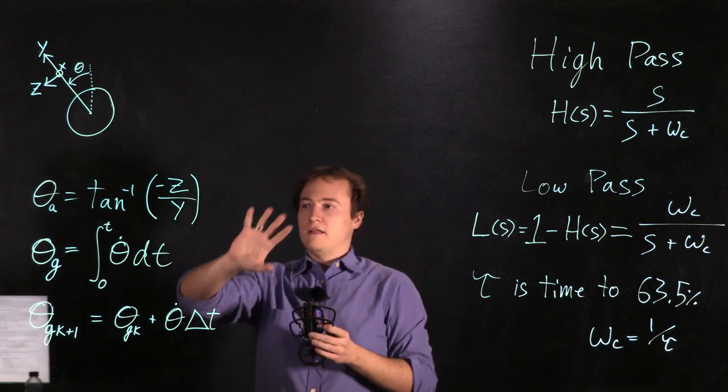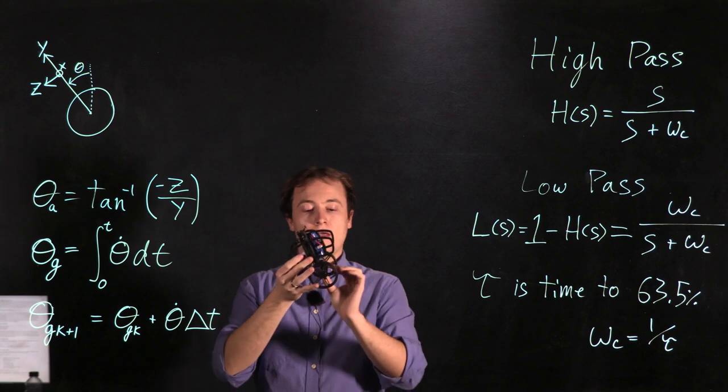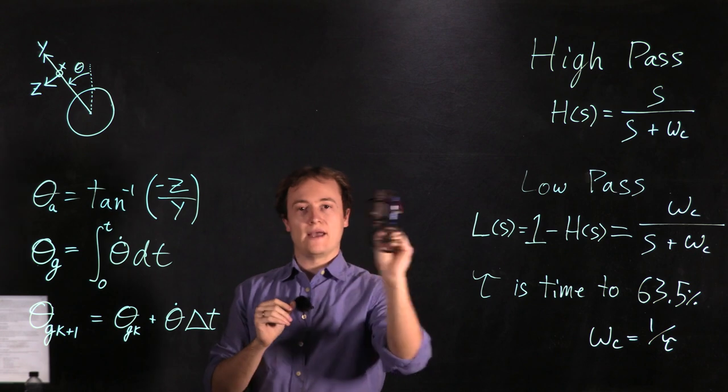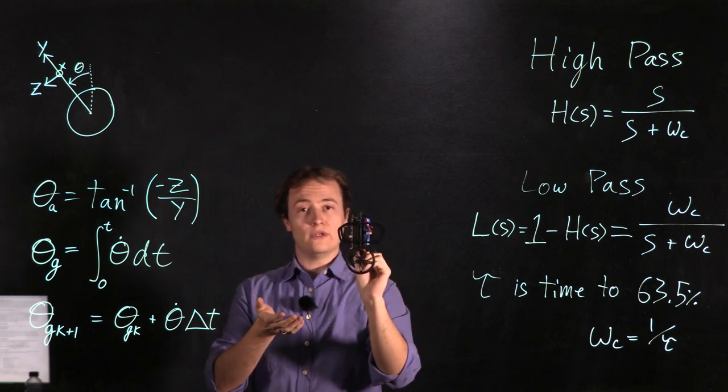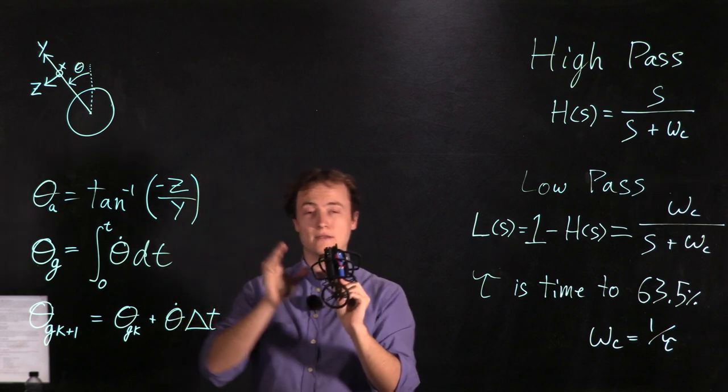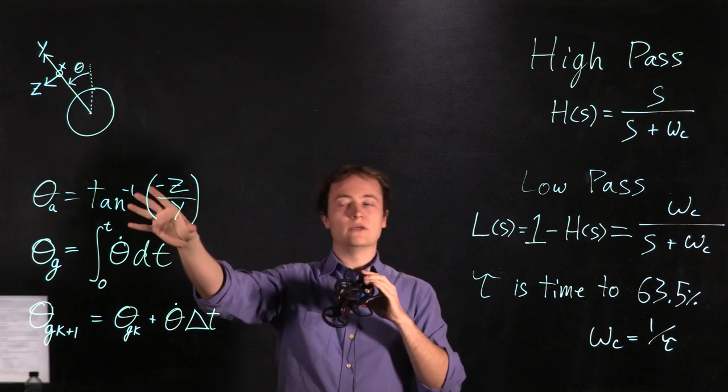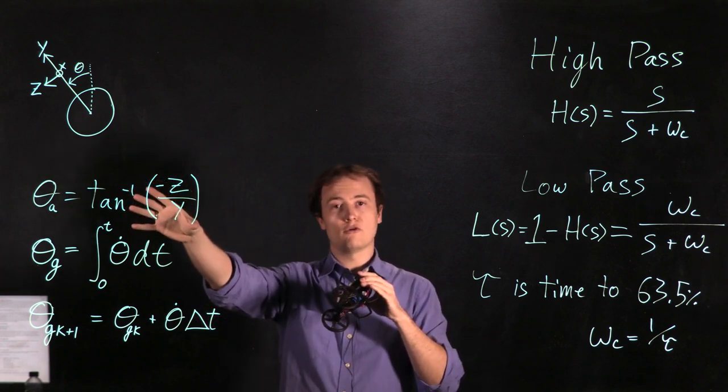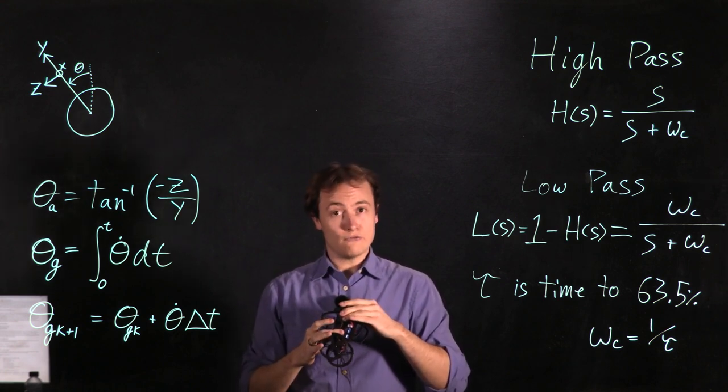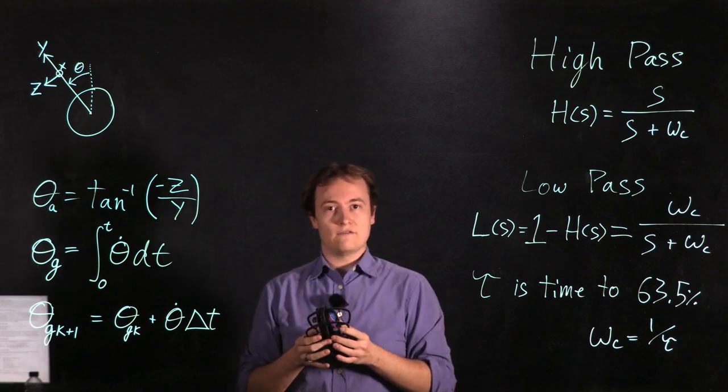Now this will give us a fantastic estimate at steady state. However you will start to notice a problem when the MIP starts driving forward and back because we are inducing unwanted noise and acceleration in both of these axes particularly the z direction. Therefore we can say that this estimate of the angle based on the accelerometer is extremely good at low frequencies but not so good at high frequencies where motion and noise start to overcome the steady state value.